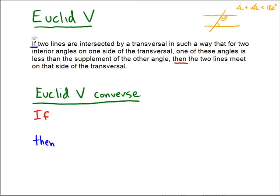The ultimate goal here is to prove the converse of Euclid's fifth axiom, the postulate, the Euclidean parallel postulate. So Euclid 5 formally is an if-then statement, an implication.